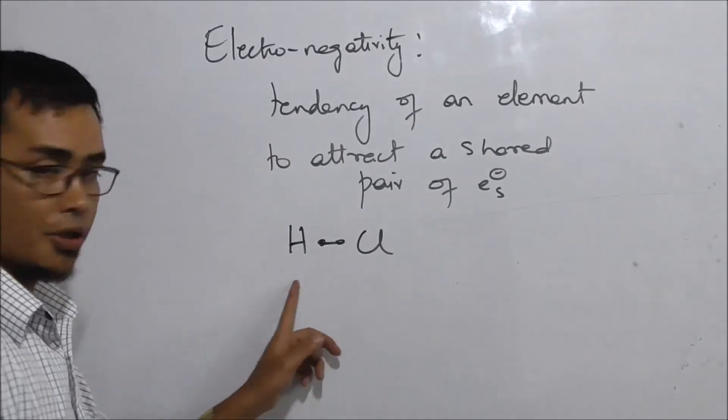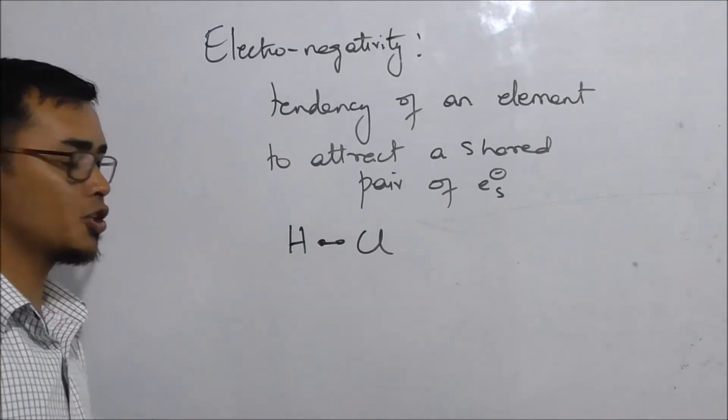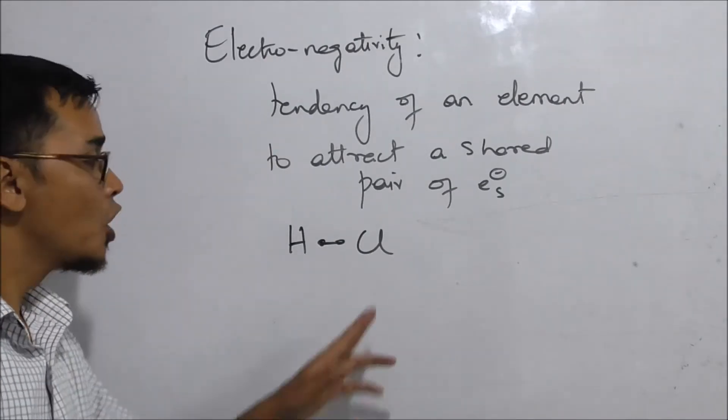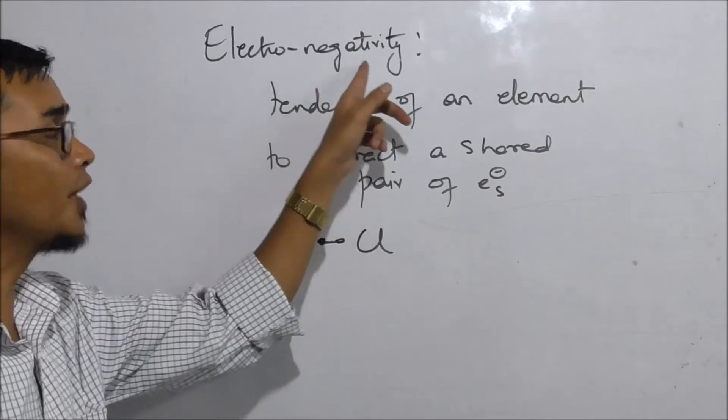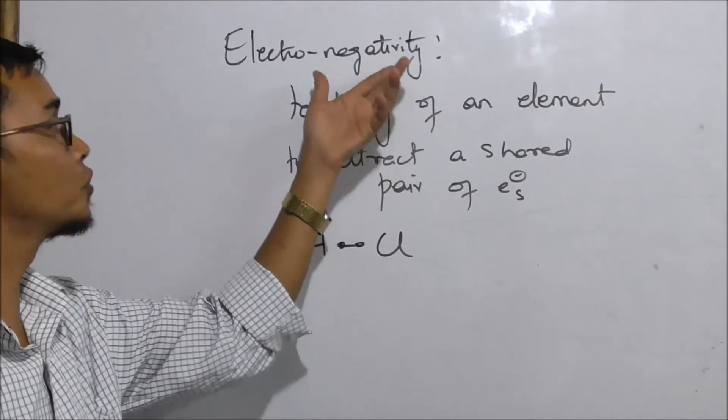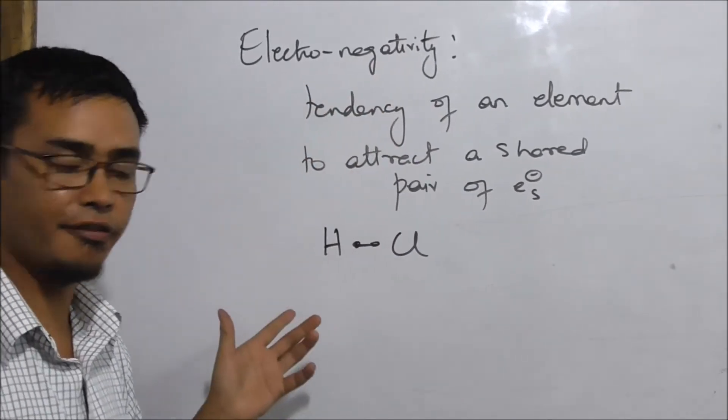If you think about hydrogen and chlorine, chlorine has a higher electronegativity value.